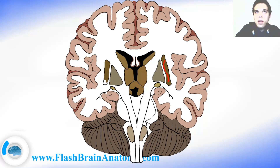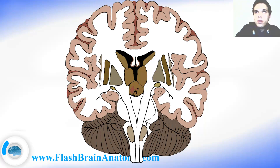So we have the putamen and the pallidum. The pallidum can also be divided into the medial pallidum and the lateral pallidum. Then we also have the claustrum. The white matter between the claustrum and the putamen is called the extreme capsule. The white matter between the putamen and the pallidum is called the external capsule.